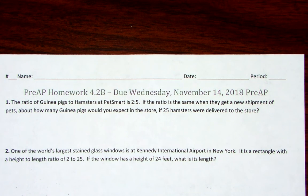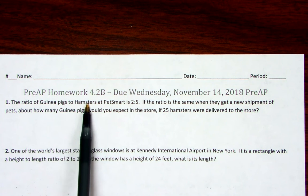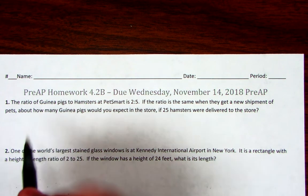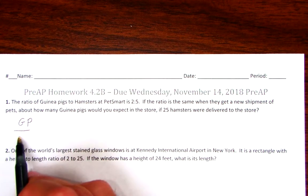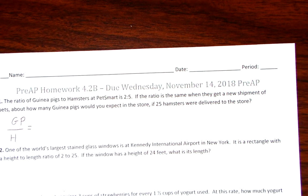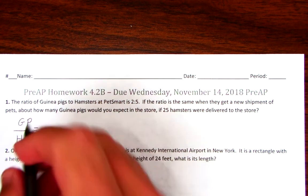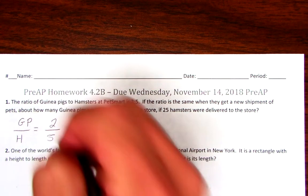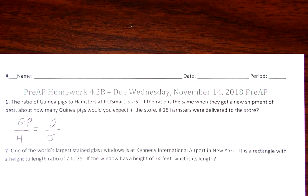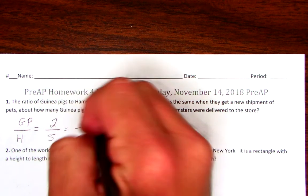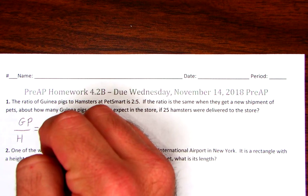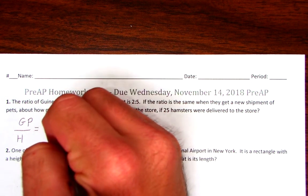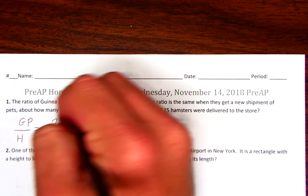Let's look at number one. The ratio of guinea pigs to hamsters - guinea pigs came first so it goes on top, hamsters came second so it goes on bottom. The ratio is for every 2 guinea pigs you have 5 hamsters. If the ratio is the same when they get a new shipment of pets, about how many guinea pigs would you expect if you have 25 hamsters? The scale factor to get from 5 to 25 is multiply by 5, so 2 times 5 would be 10. You'd expect 10 guinea pigs.